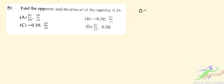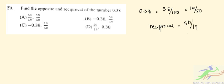Question number 20: find the opposite and the reciprocal of 0.38. We can write 0.38 as 38 by 100, which simplifies to 19 by 50. The reciprocal is 50 by 19. The opposite is minus 0.38. The correct option is B: the opposite is minus 0.38 and the reciprocal is 50 by 19.